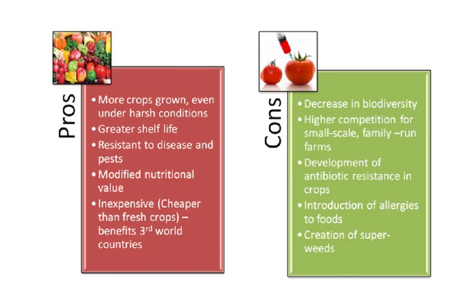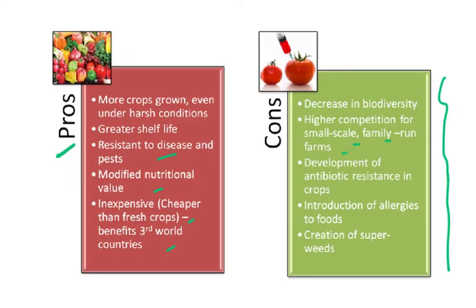The pros of genetically modified crops include: more crops grown even under harsh conditions, greater shelf life, resistance to disease and pests, modified nutritional value such as increased vitamin content in rice, and being inexpensive — cheaper crops benefit developing countries. The cons include: decrease in biodiversity, higher competition for small-scale family-run farms, development of antibiotic resistance in crops, introduction of food allergies, and creation of superweeds.